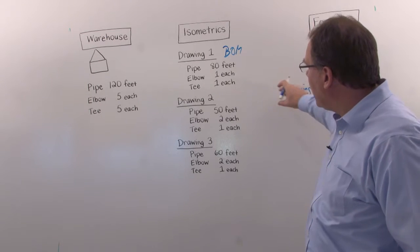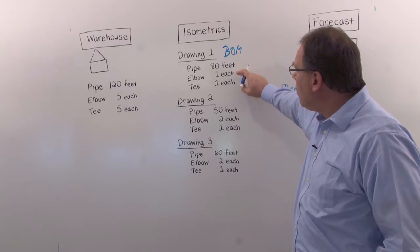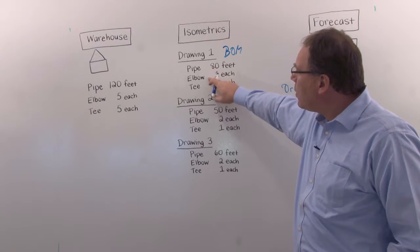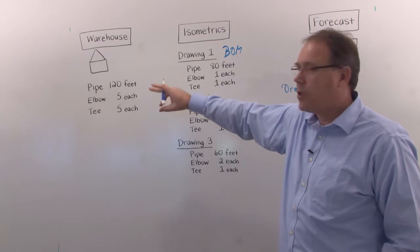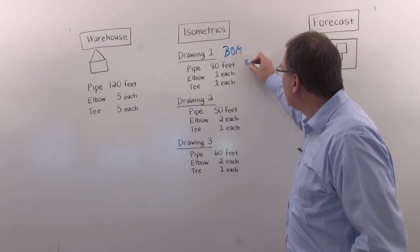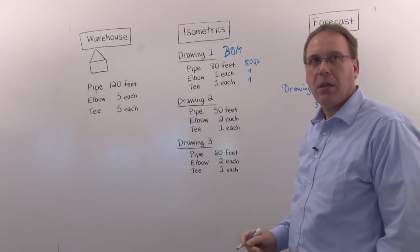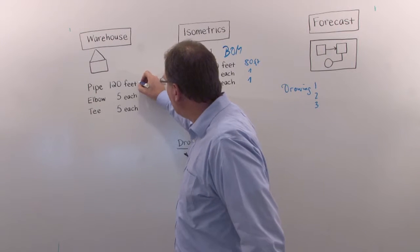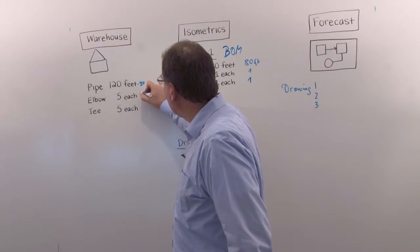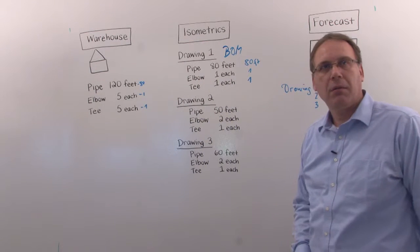So I take the first drawing. Here is the first drawing. I need 80 feet, one each of an elbow and a tee. Do we have 80 feet in the warehouse? Yes, I have 80 feet in the warehouse. So I have 80, I have one elbow and I have one tee. In parallel, when the system goes through, it will calculate minus 80, minus one, minus one. As you can imagine.